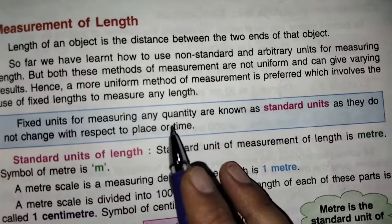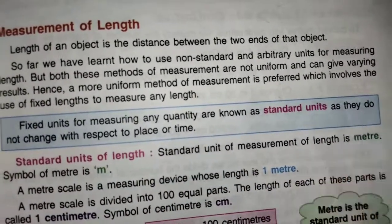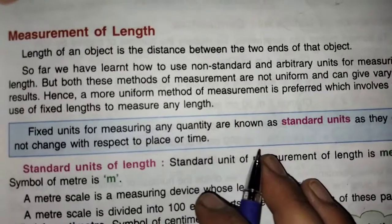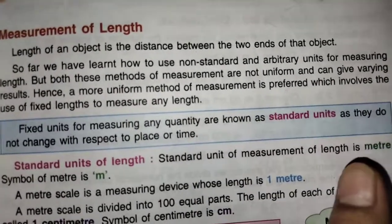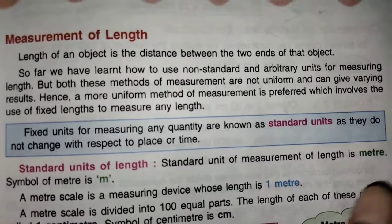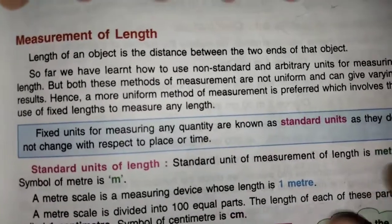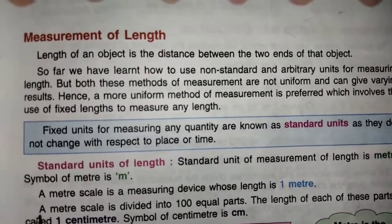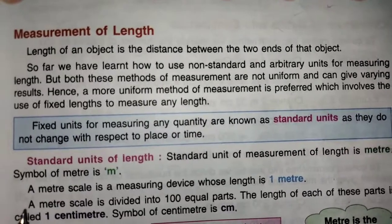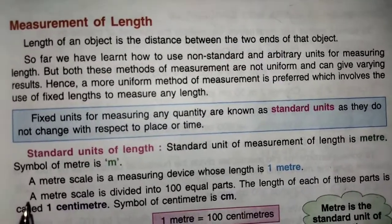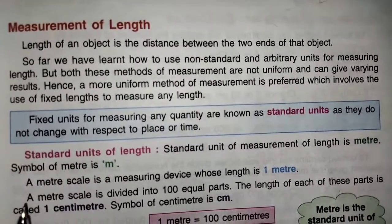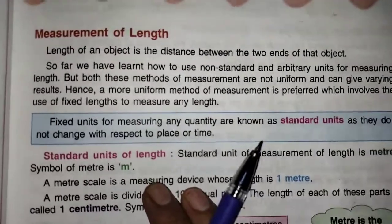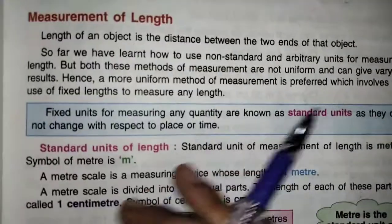Fixed units for measuring any quantity are known as standard units, as they do not change with respect to place or time. The standard unit of length — we learnt this in science. Same thing we have to do in maths also. Last time we learnt standard units of length, standard unit of capacity, and temperature is measured in centigrade scale. Now in maths, we are doing the calculation.